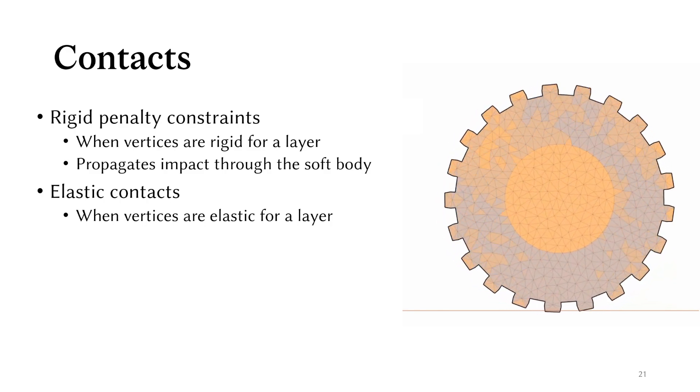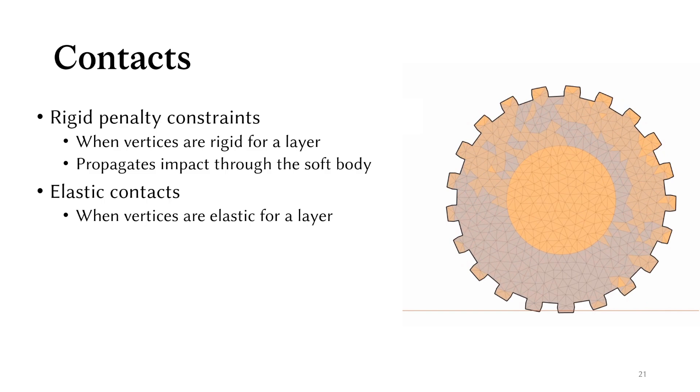This means that we always consider the first contact for that layer as rigid contacts. This has the effect of propagating the impact through the whole soft body. At the next layer, regions near contacts are often in high strain rate regions, meaning they tend to elastify for the second layer. As the contact vertices are now elastic, the contacts are handled elastically. Again this all happens during a single time step.